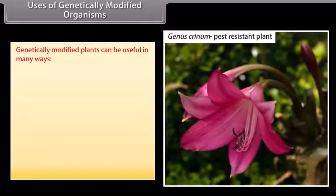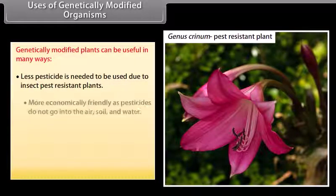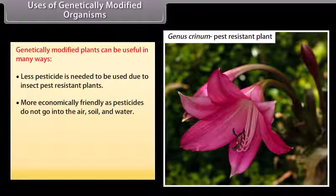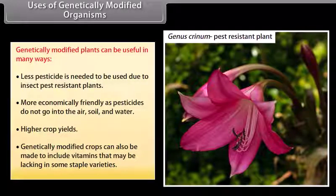Genetically modified plants can be useful in many ways. Less pesticide is needed due to insect pest-resistant plants. They are more economically friendly as pesticides do not go into the air, soil, and water. There are higher crop yields. Genetically modified crops can also be made to include vitamins that may be lacking in some staple varieties.